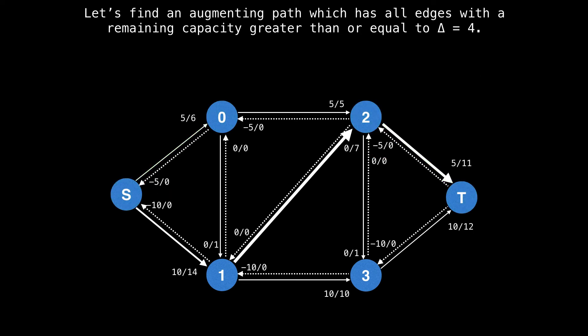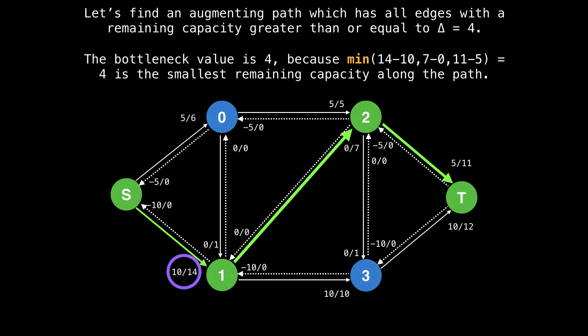There's also another path with all remaining capacities greater than four, which we can take from s to t, which is down to one diagonally up to node two and to the sink. Again, find the bottleneck value, which we know to be four, because four is the smallest remaining capacity along path, then we can augment the flow.